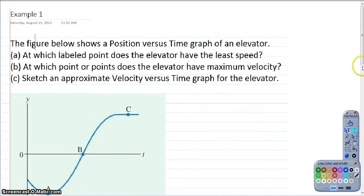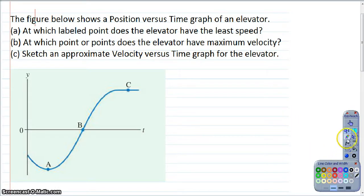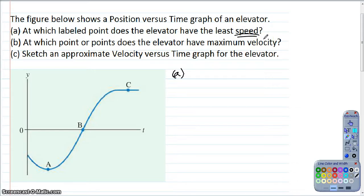Okay, example one. The figure shows a position versus time graph of an elevator. At which labeled point does the elevator have the least speed? At which point or points does the elevator have the maximum velocity? And then sketch an approximate velocity versus time graph for the elevator. Let's start with part A. If this is position versus time, the velocity is the slope.